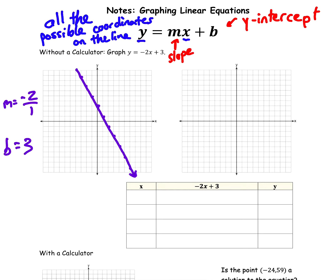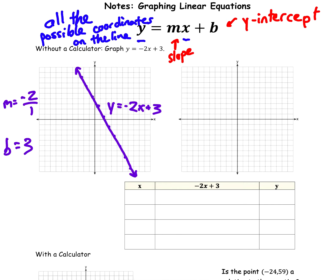Make sure you draw the line going all the way through the graph with arrows on the end, because the line continues to go on forever. Make sure you label the line y equals negative 2x plus 3. That's the method just using the y-intercept and slope — usually the first method taught for graphing linear equations.